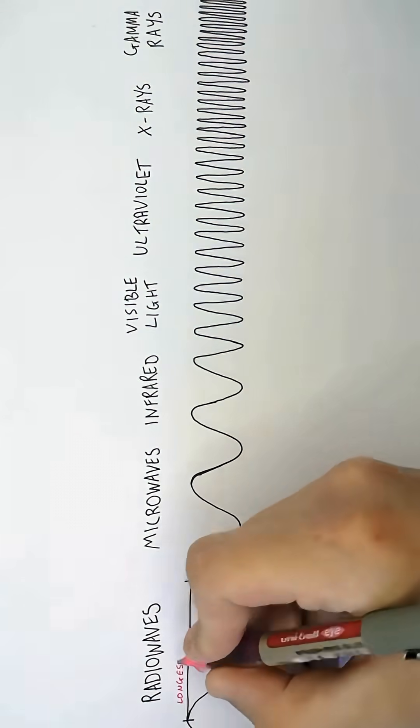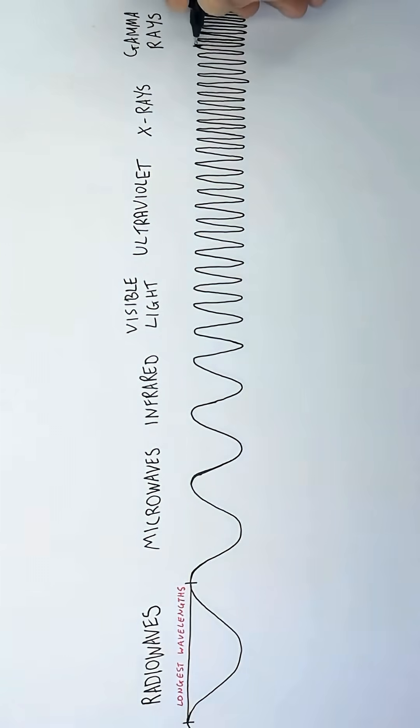The radio waves have the longest wavelengths, and the gamma rays have the shortest wavelengths, as you can see here. So gamma rays have the shortest wavelengths and radio waves have the longest wavelengths.